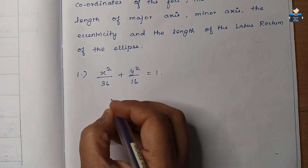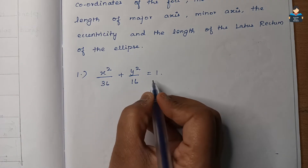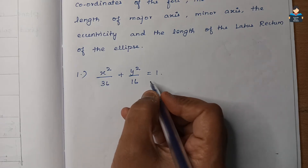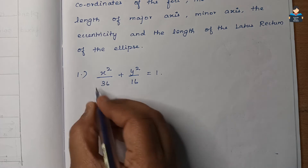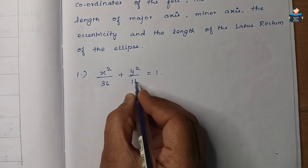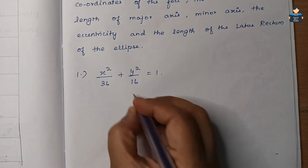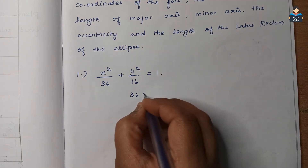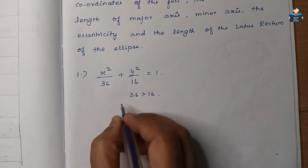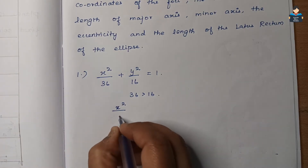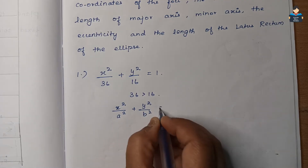Solving the first sum: x² / 36 + y² / 16 = 1. Here, 36 is greater than 16, so the major axis is along the x-axis. Comparing with the standard equation x² / a² + y² / b² = 1, we get a² = 36 and b² = 16.